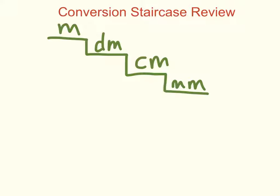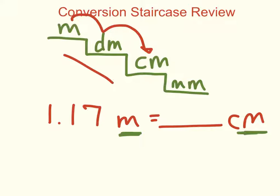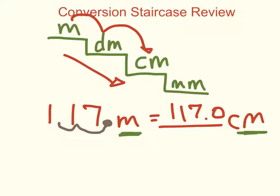Let's try some examples together. If I had 1.17 meters, how many centimeters would that be? I'm going from meters to centimeters — that's two steps down on the staircase. So my decimal is going to move to the right two steps. My decimal moves two place values to the right, and my new number becomes 117. So 1.17 meters is equal to 117 centimeters.